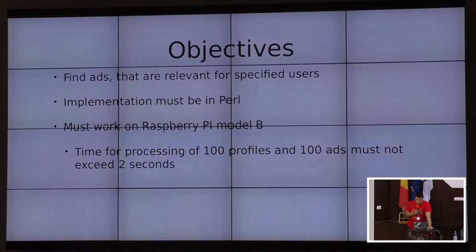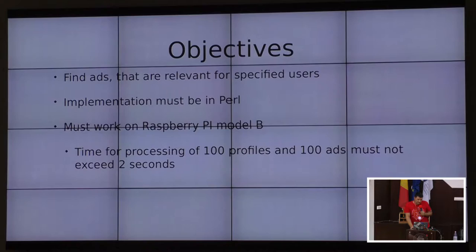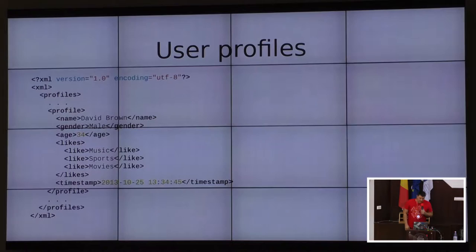So what were the task objectives? As I said, I had to find ads that were relevant for specified users. The implementation had to be in Perl and it had to work on Raspberry Pi. There was a constraint on performance of the program. We had to process 100 profiles and 100 ads and it had to take less than 2 seconds. The user profiles file basically contains name, gender, age, and a list of preferences for each user.